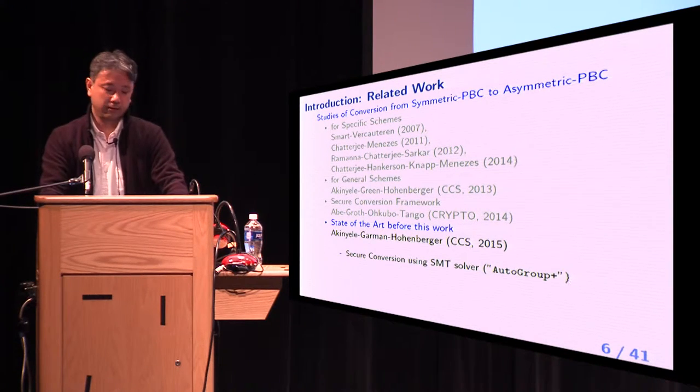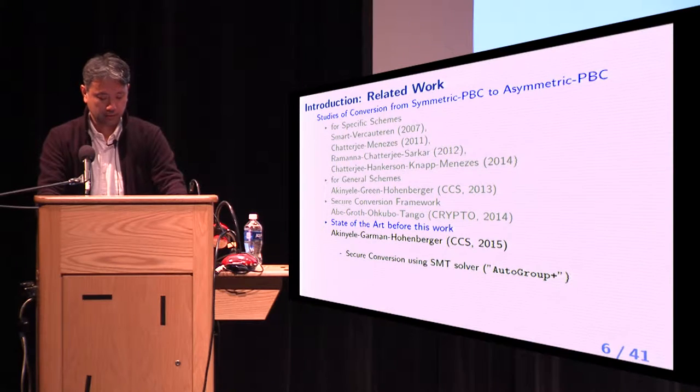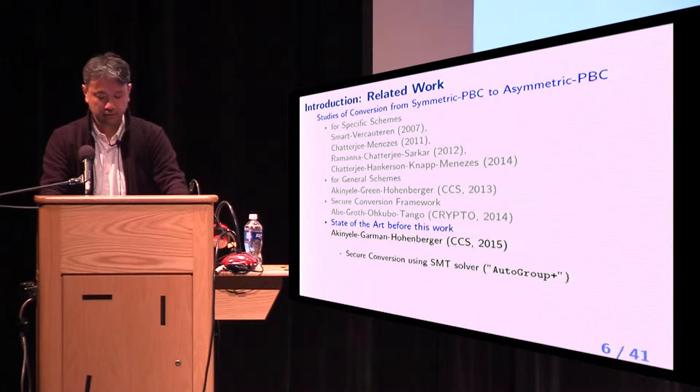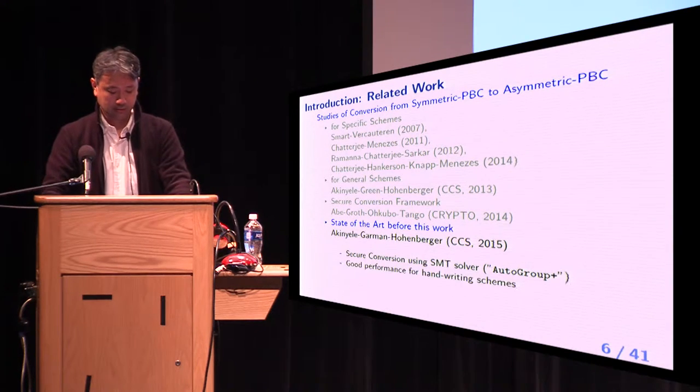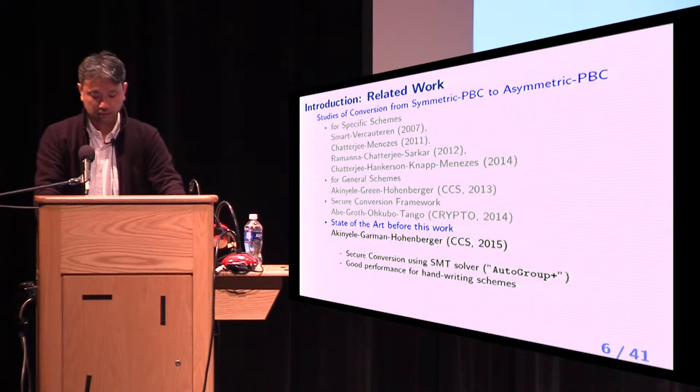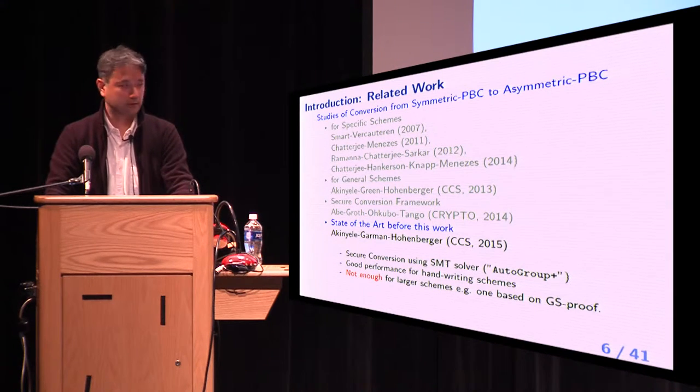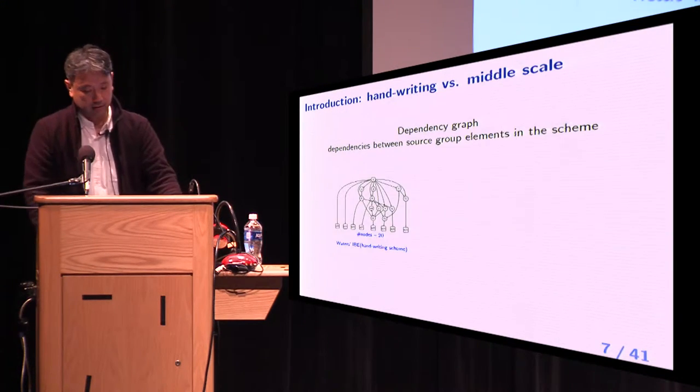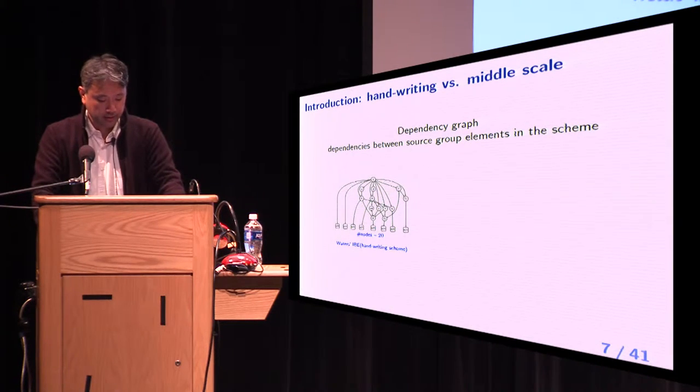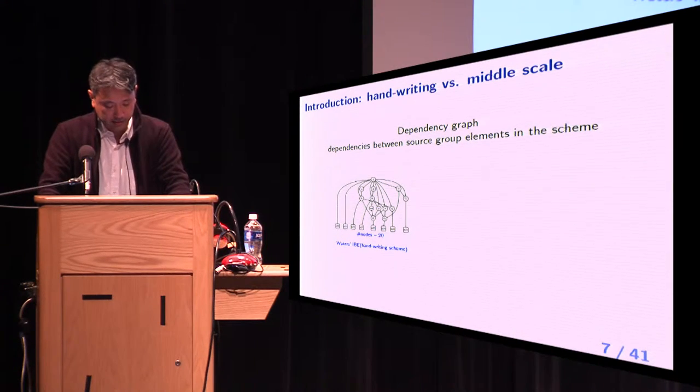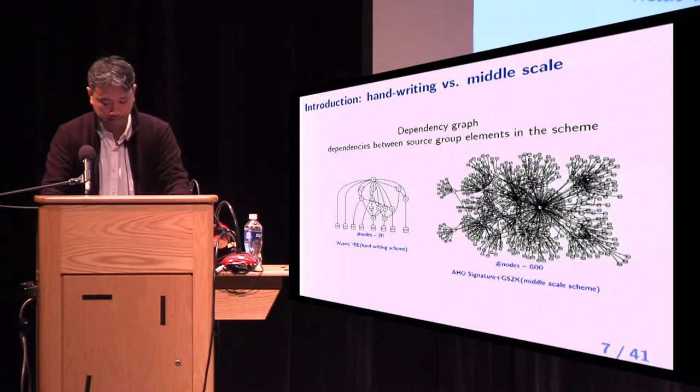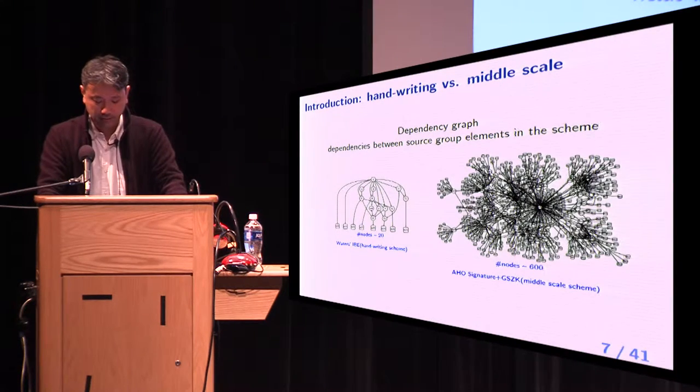At CCS 2015, Abe et al. proposed a secure conversion using SMT Solver, which is called AutoGroup Plus. It has good performance for handwritten schemes, but not enough for larger schemes. For example, one based on Groth-Sahai proof. This is a visual image of a typical handwritten scheme. And this is that of a scheme based on Groth-Sahai proof.